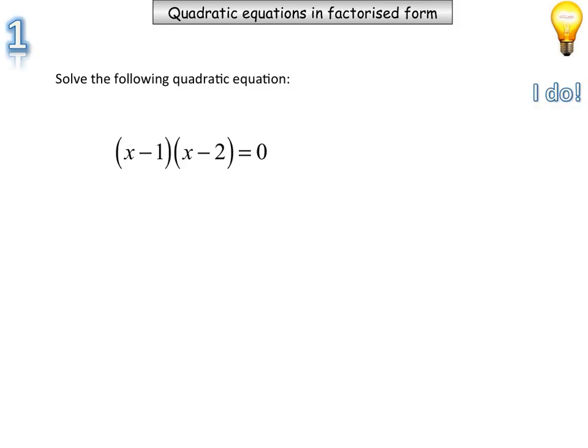Now, quadratic equations in factorized form can be quite easy to solve. So factorized form means here's two expressions multiplying by each other. If I expanded this expression, I'll end up getting a quadratic equation in expanded form. But here, this is factorized form. So this number multiplied by this number is equal to zero.